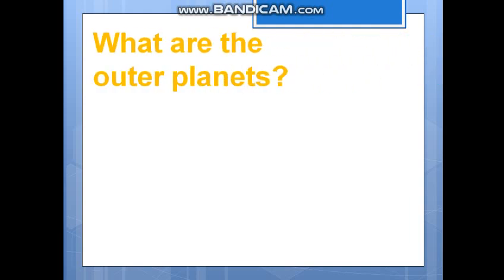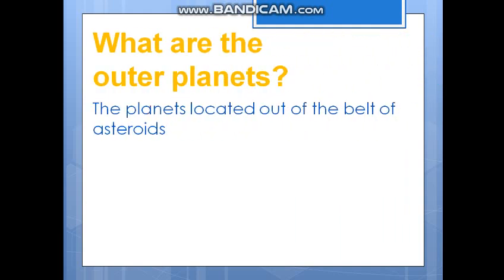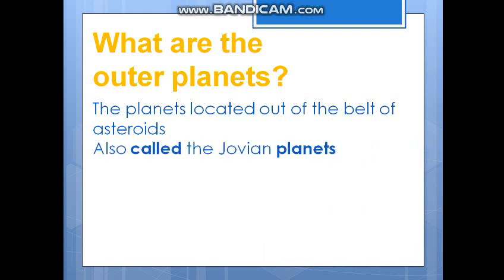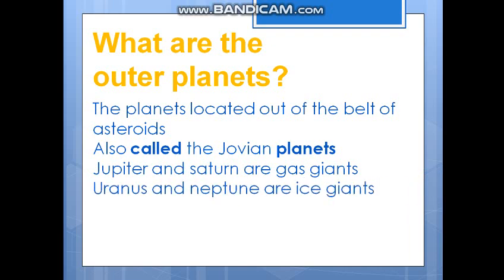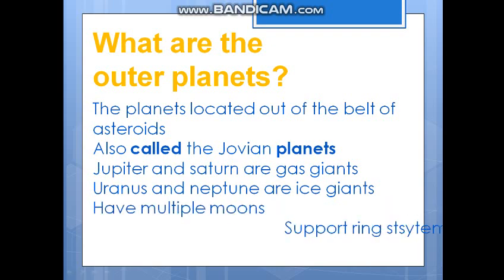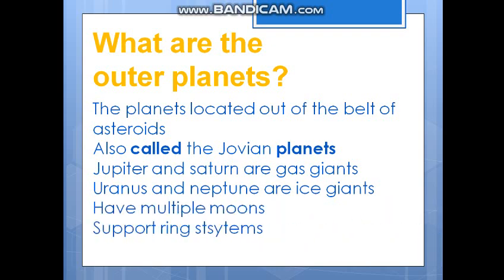What are the outer planets? The planets located outside the belt of asteroids are known as outer planets. They are also called the Jovian planets. Jupiter and Saturn are gas giants, and Uranus and Neptune are also gas giants. They have multiple moons and they have a ring system.